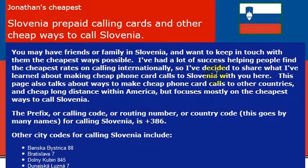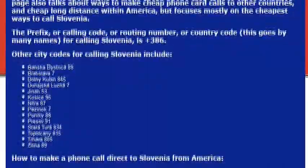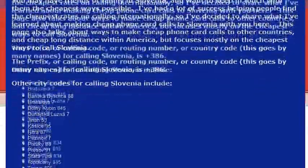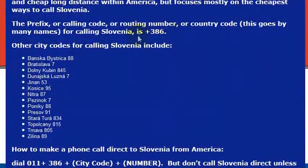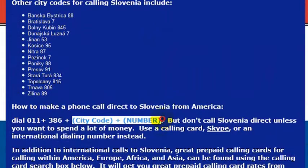We went back and visited our family in Slovenia and actually needed to call them when we were in the country as well as from outside of the country. If you're calling directly to Slovenia, what you need to do is know the country code for Slovenia, which is 386. You would dial 011, then 386, which is the country code, and then the phone number that you want to reach.